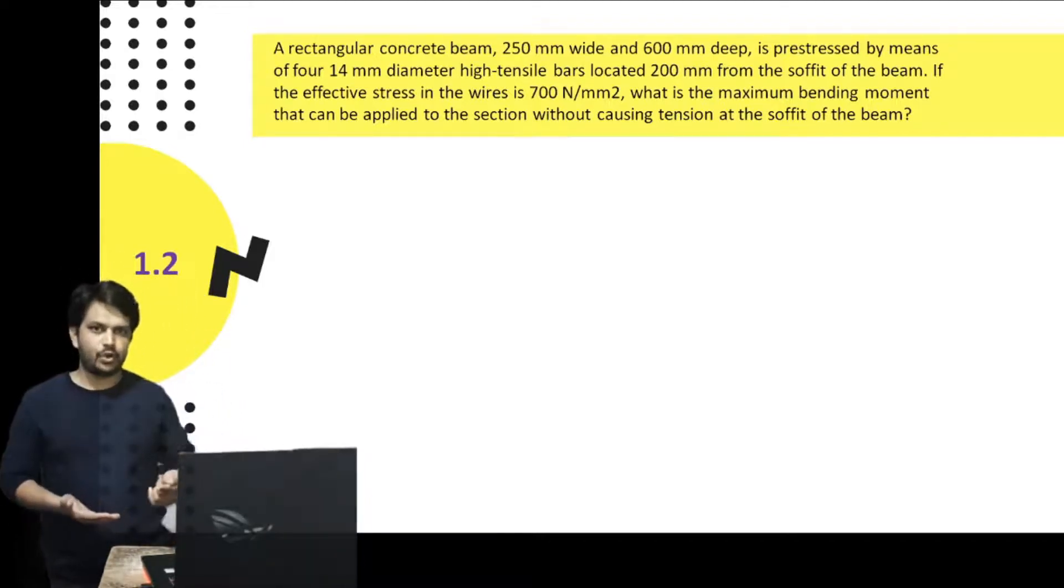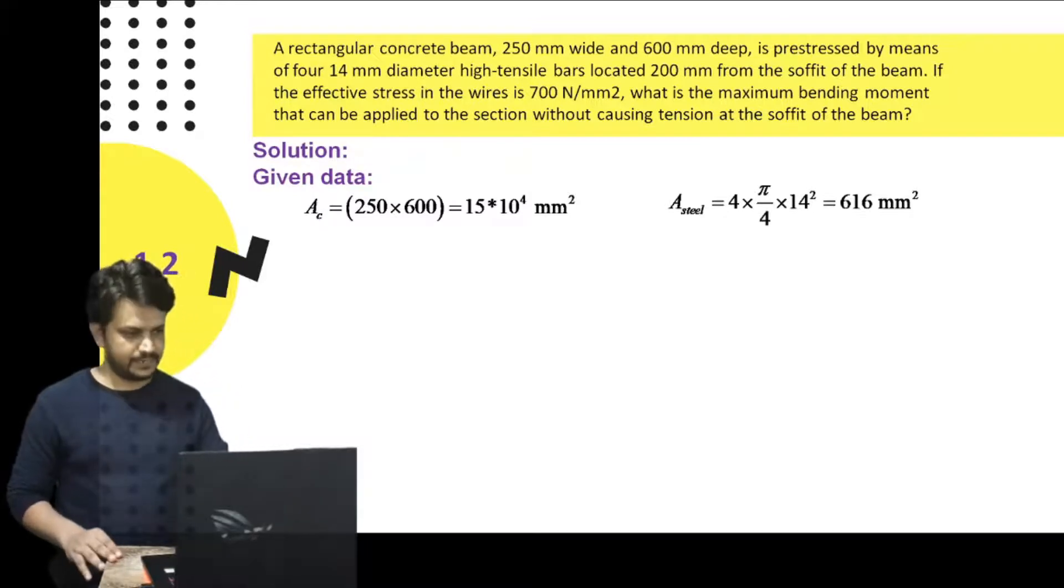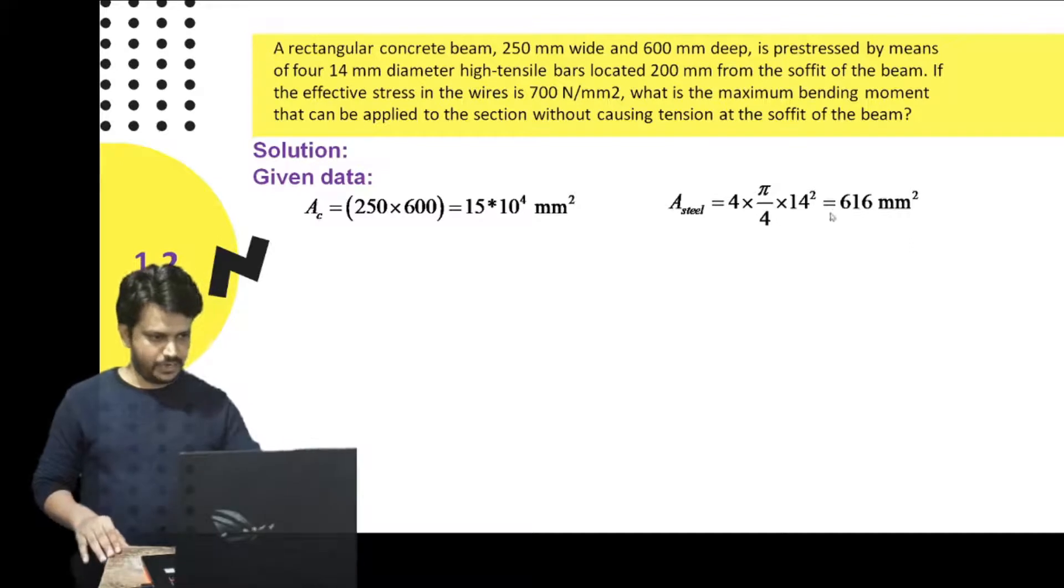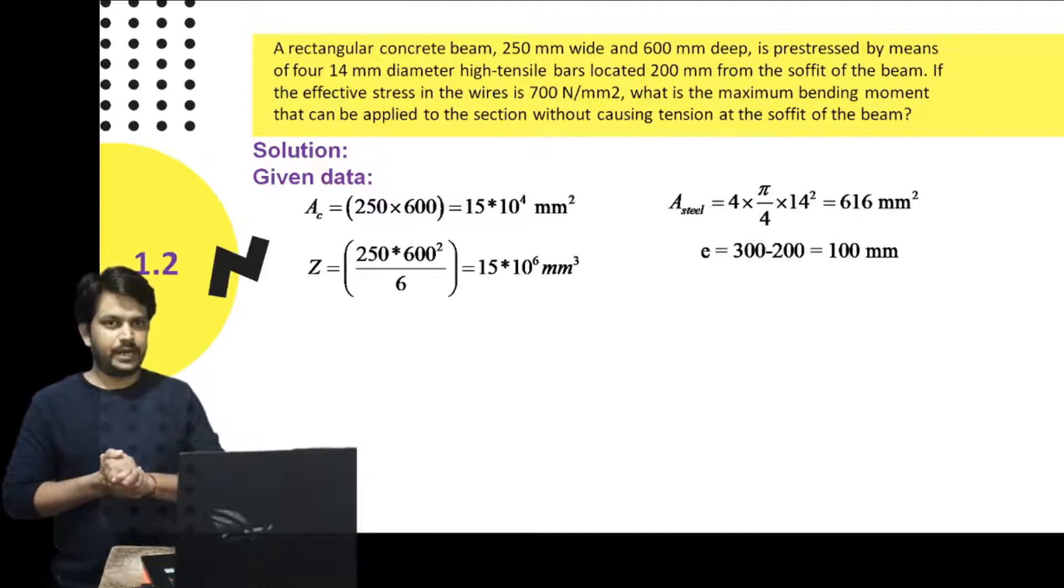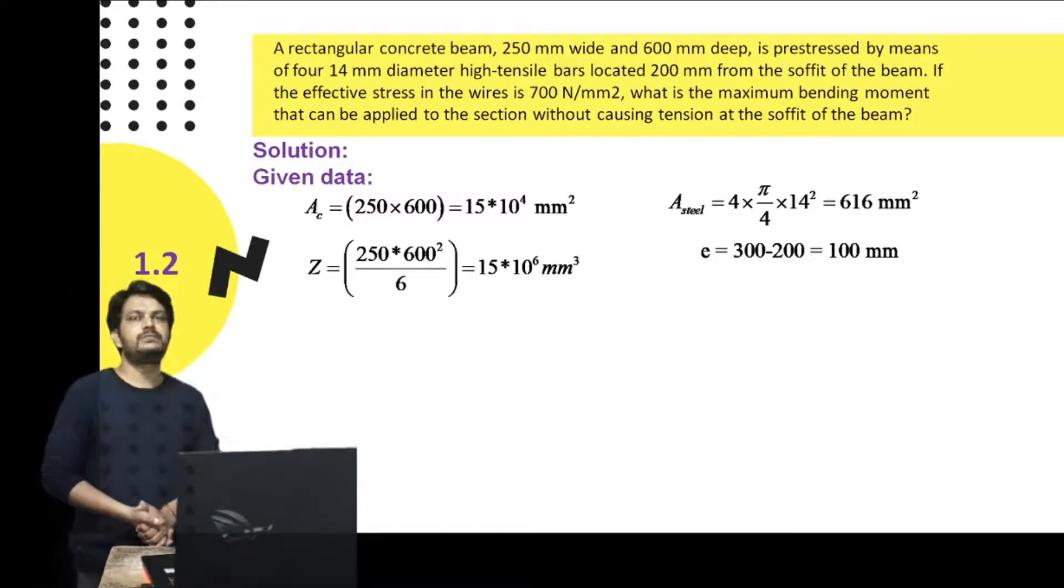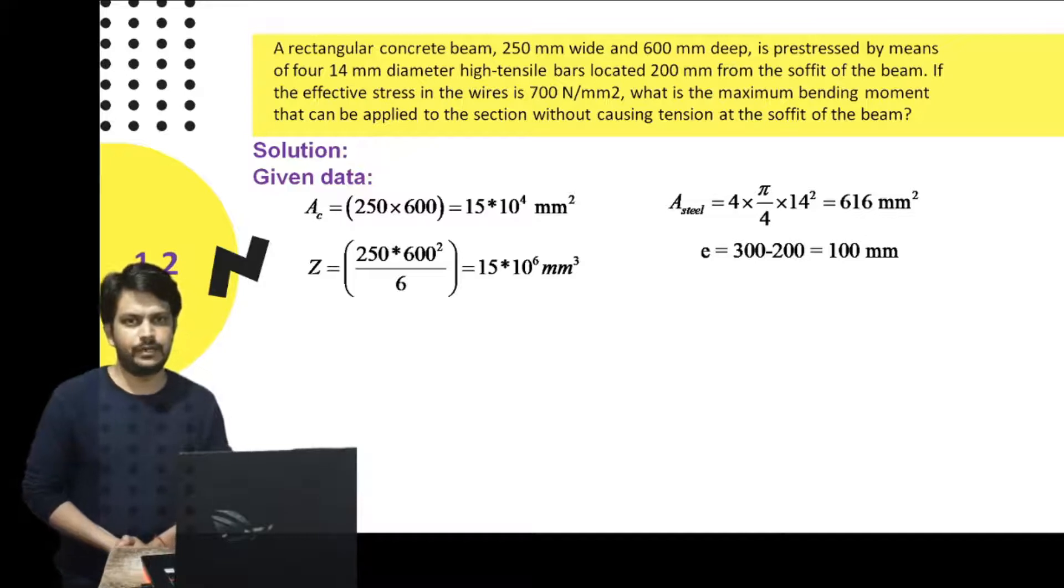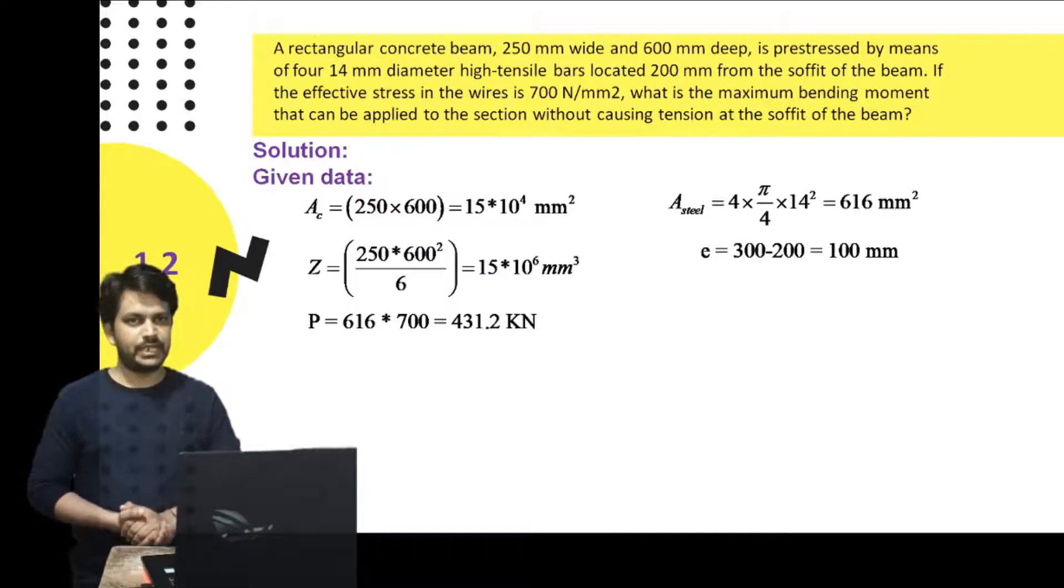Let us move towards the solution. Cross-sectional area A equals 250 by 600. Area of steel: four tendons of 14 mm diameter, so area of steel can be found as four times the area of each bar, which is 616 mm squared. Section modulus Z equals bd squared by 6, which is 15 times 10 to the 6 mm cubed. Eccentricity e: since the tendons are situated at 200 mm from the soffit and beam has a depth of 600 mm, the neutral axis is at mid depth, 300 mm from soffit. So eccentricity equals 300 minus 200, which is 100 mm. Prestressing force P equals area of tendon multiplied by the stress, 700, so 431.2 kilonewtons.